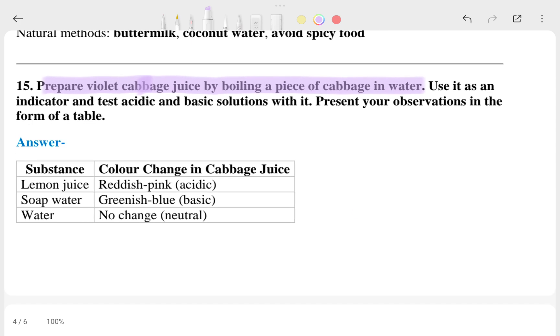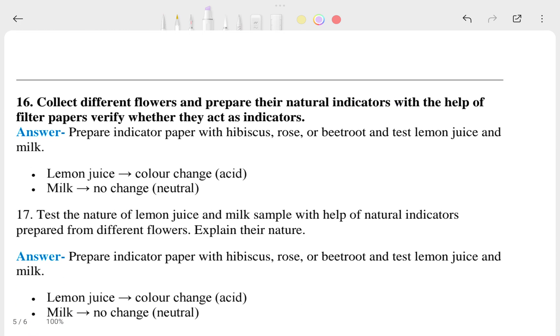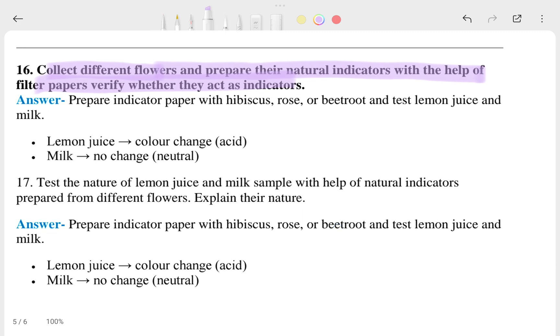Question 16: collect different flowers and prepare their natural indicators. This is the answer. Question 17 is similar; both are the same but a little bit different. The experiment is with flowers, so both answers are totally the same because both experiments use different flowers.